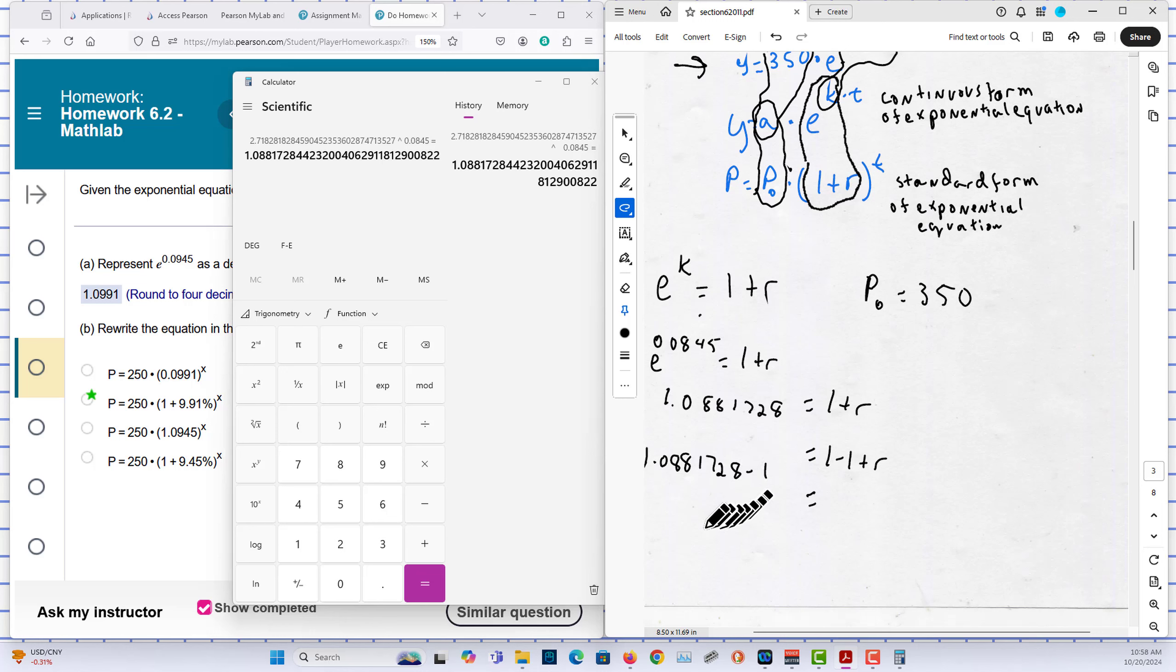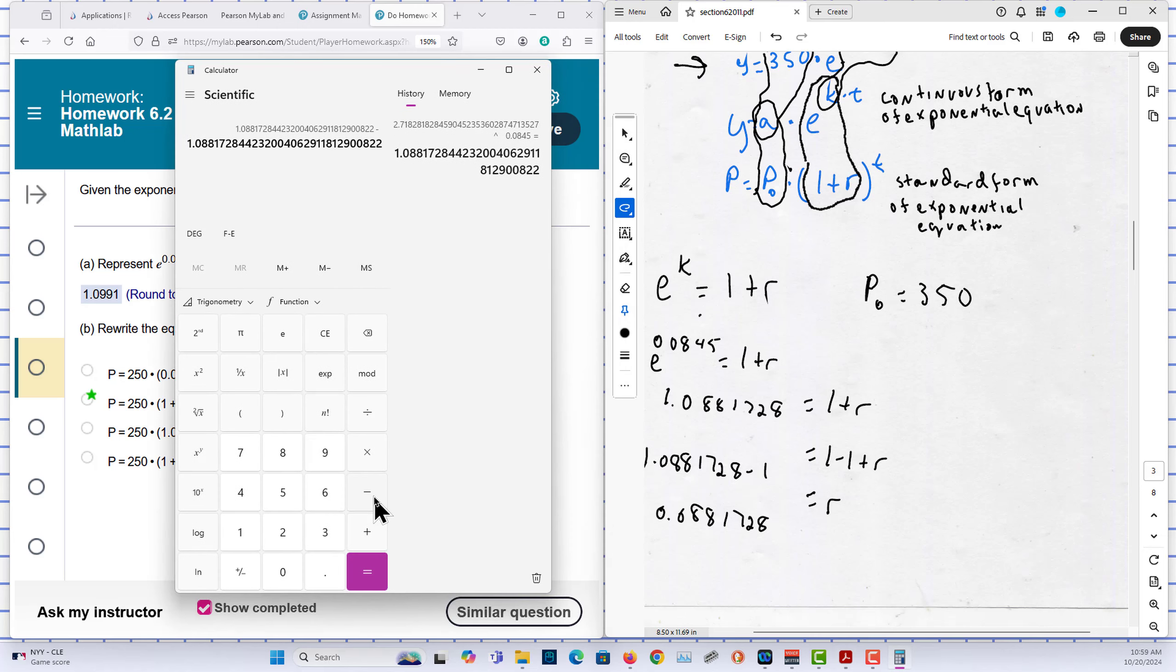And that's equal to R. Minus 1 from both sides. So R is equal to 0.0881728. So on my calculator, I'm going to subtract 1 here. Okay, so that gives you my R.